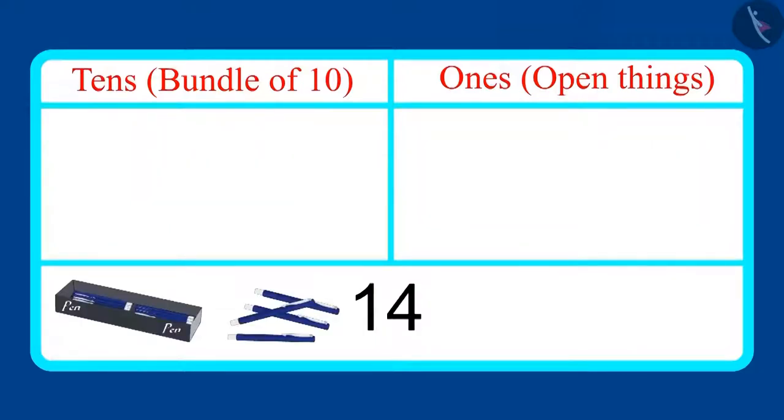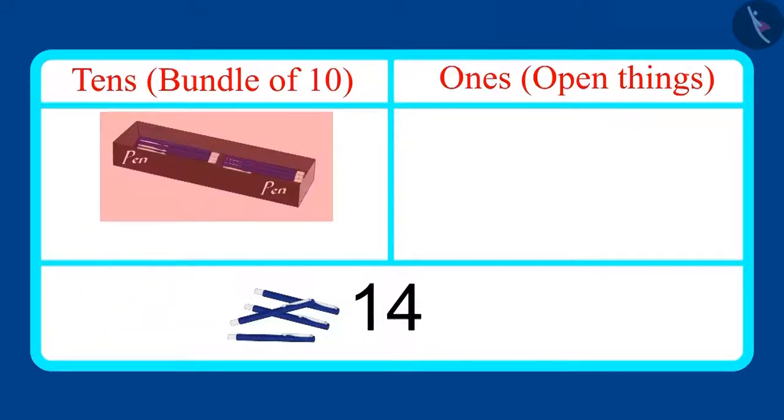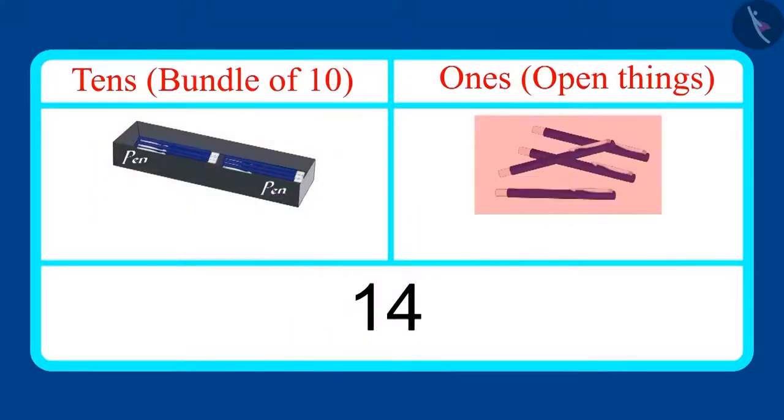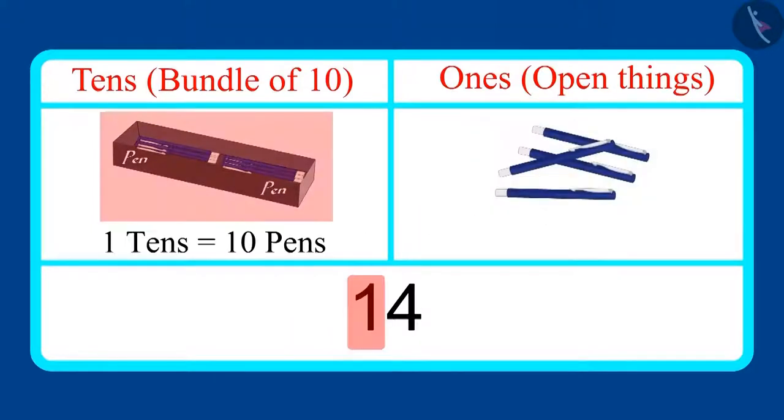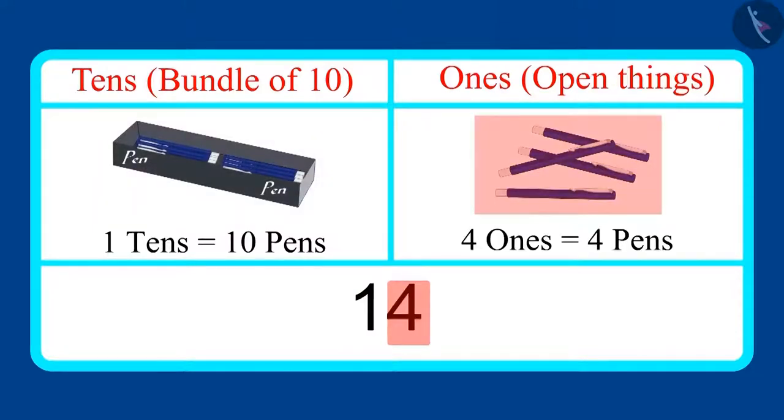Now, let's look at the number of pens, which is fourteen. Can you tell me how many tens and ones are there in it? Come on, let's see. This is one bundle of ten pens and four more pens. That means it has one tens and four ones. Your answer was the same, right? Good.